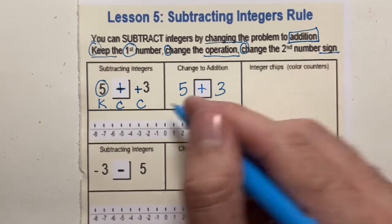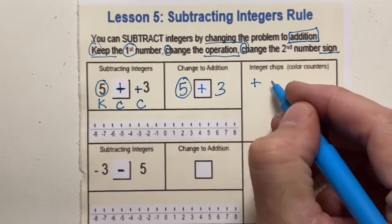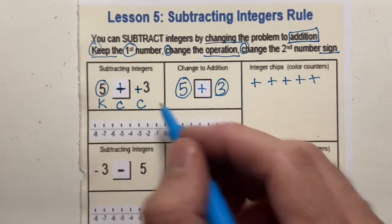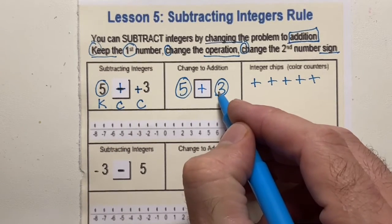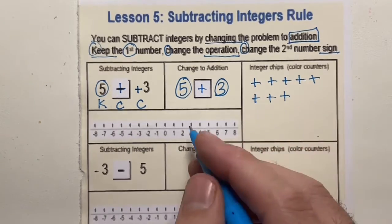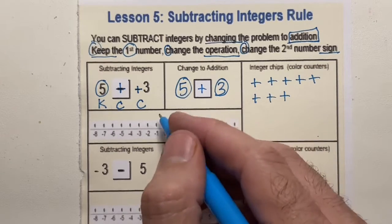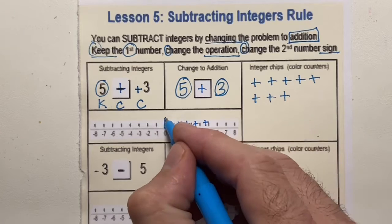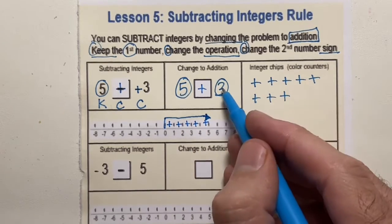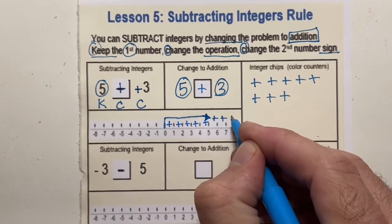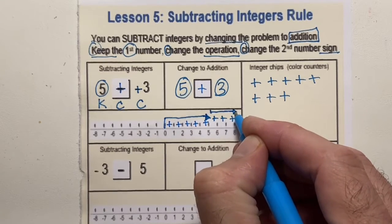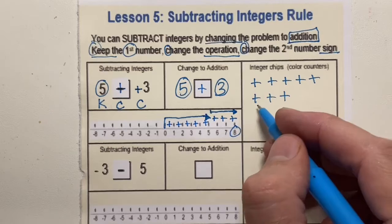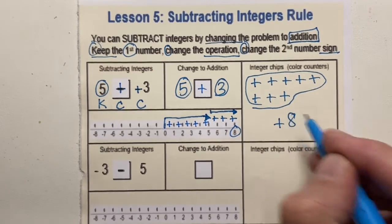On the model over here, we end up with 5 positives and also 3 positives, because we took away negatives, so we got more positive. Graphing them on the number line, we count the positives going to the right: 1, 2, 3, 4, 5 — draw an arrow — and then 3 more positives. We end up at positive 8. We do not change directions; there are no opposites. So our answer is positive 8.